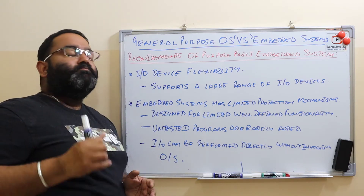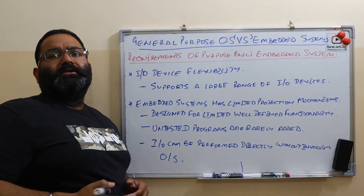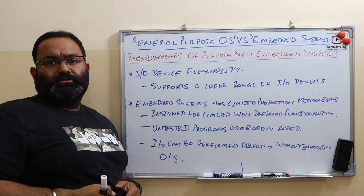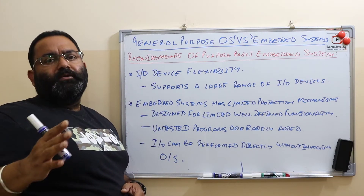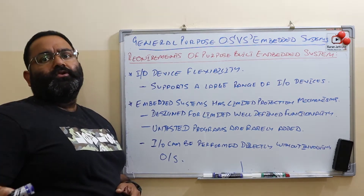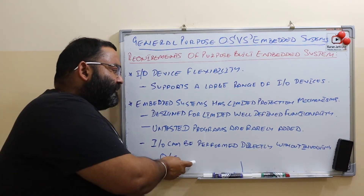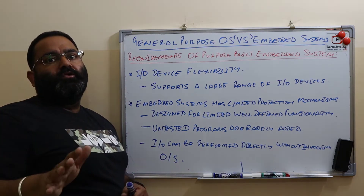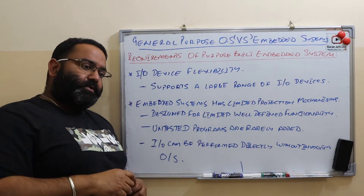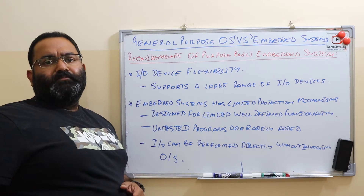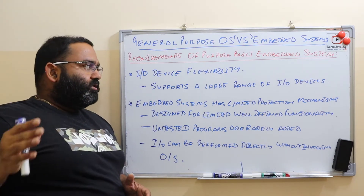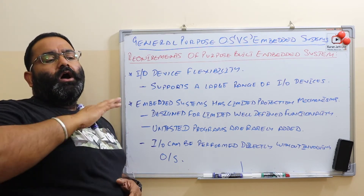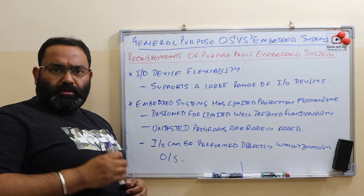In embedded systems, input/output can be performed directly by the device without involving the operating system. In general purpose operating systems, most I/O functions are provided with the support of the operating system, which is not the case with embedded systems. Embedded systems support a huge variety of input/output devices.